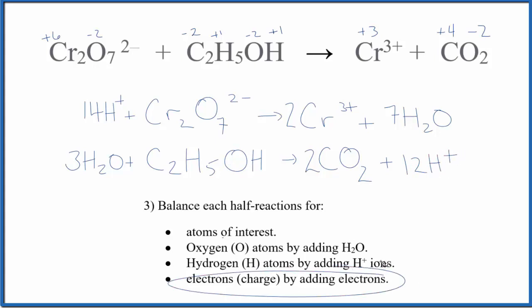Now we need to balance the charge. We're going to add electrons to both sides. It's a little challenging up here. 14+ and 2-, that gives us 12+ over here. In the products we have 2 times 3+, 6+. So if I had six electrons here, six negative charges, that'll give me a 6+ on this side, 6+ on this side, we're good. Over here we just need to add 12 electrons.